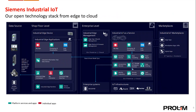This slide explains Siemens Industrial IoT — an open technology stack from Edge to Cloud. It focuses on an open ecosystem from Edge to Cloud, covering the different layers and components involved. The first is the data source: input protocols include a variety of industrial protocols such as OPC UA, Simatic S7, Modbus TCP, and Ethernet/IP, representing different ways devices on the shop floor communicate and send data.